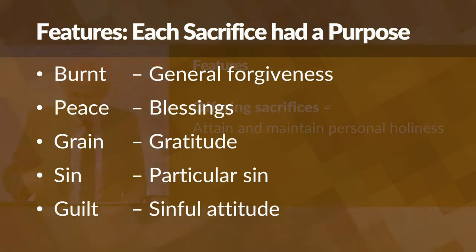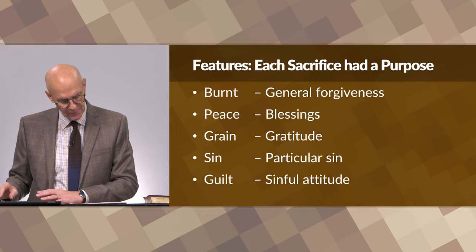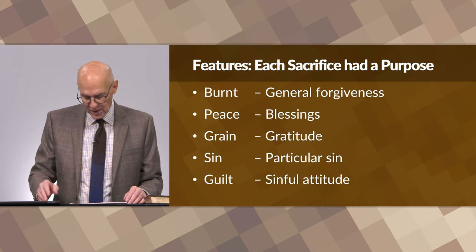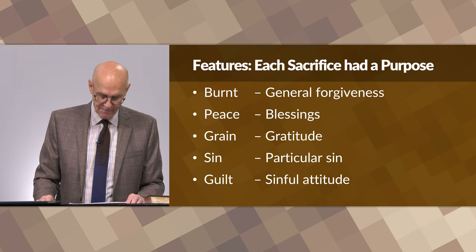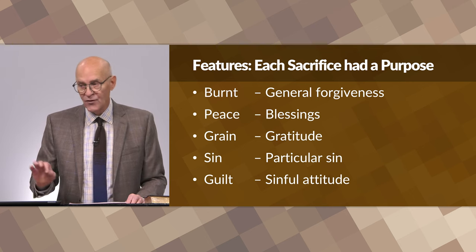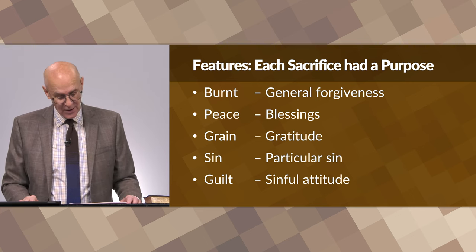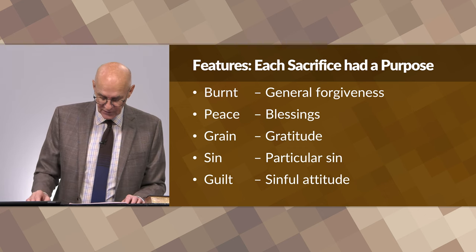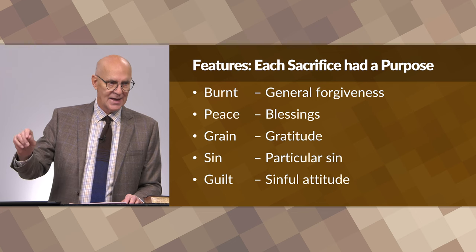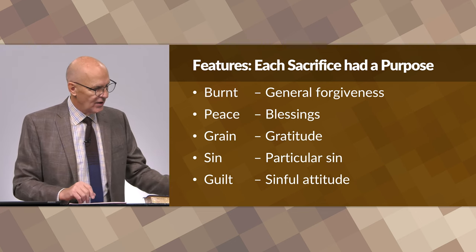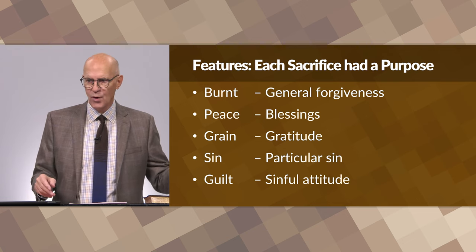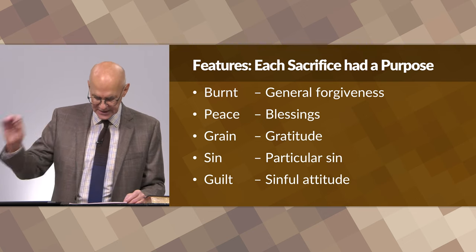Each type of sacrifice had a specific purpose. The burnt offering was for forgiveness and mercy in general. The peace offering was a request for God to bless the offerer. The grain offering was to show gratitude. The sin offering was atonement and forgiveness for a particular sin — for example, cheating a friend out of a certain amount of produce. That was the sin offering.